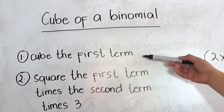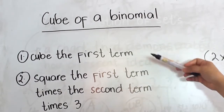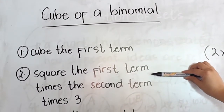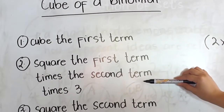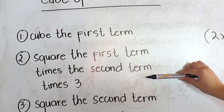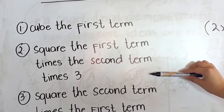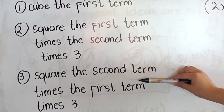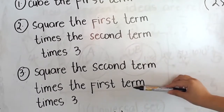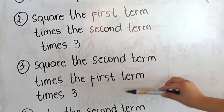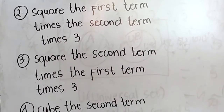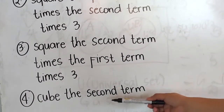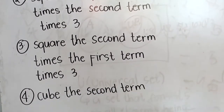First, cube the first term. Second, square the first term times the second term times 3. Third, square the second term times the first term times 3. And the last rule is cube the second term.